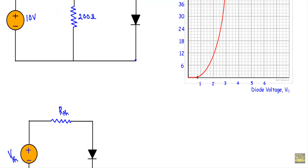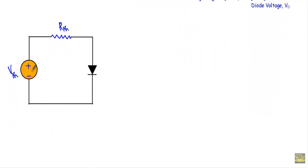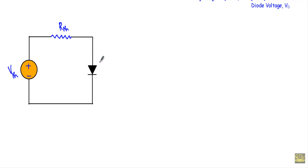The Thevenin equivalent circuit states that whatever the circuit configuration, we can reduce it to a single voltage source in series with a resistor. I will denote this voltage source as VTH and this resistance as RTH. After finding RTH and VTH, I will apply KVL in this loop, draw the diode load line, find the coordinates of the operating point, and calculate the current flowing through the diode.